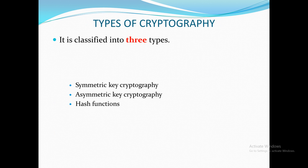Types of cryptography — it is classified into three categories: symmetric key cryptography, asymmetric key cryptography, and hash functions. These involve encryption and decryption methods. Encryption is the process of converting information or data into a code, especially to prevent unauthorized access. Decryption is the conversion of encrypted data back into its original form — it is generally the reverse process of encryption.